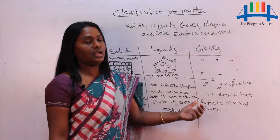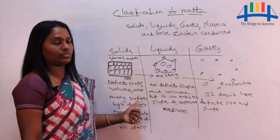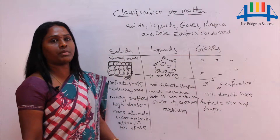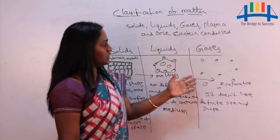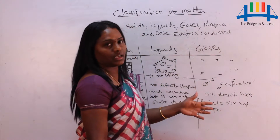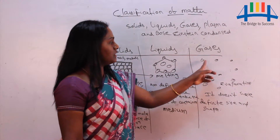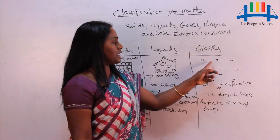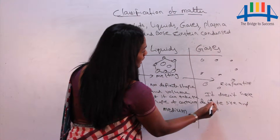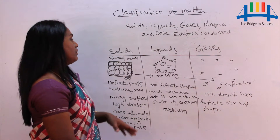Liquids and gases can flow, but solids cannot flow. Gases are the third state of matter. In gases, there is no intermolecular force of attraction, but they have more intermolecular space — the space between particles is large. Gases do not have a definite size and shape.